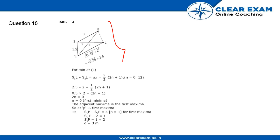S1L's value is 2.5 and S2L is 2. So 2.5 minus 2 equals 0.5 equals 1/2 times (2n + 1), which gives us 2n + 1 = 1.